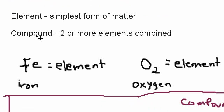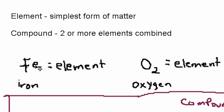A compound is when you have two or more elements combined. So you get two elements, you put them together, and you have a compound — something being formed. Iron is one type of element and oxygen is another type of element. If you put both of these elements together, you have a compound.